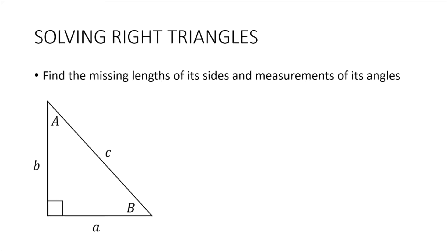Let's say we have a right triangle here, where the sides are labeled as A, B, and the longest side is C. The angle opposite side A is labeled as capital A, and the angle opposite side B is capital B.